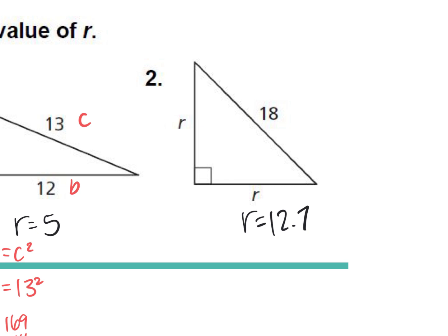Use sine. Do you know either of the angles? They're both 45. Why do both of the angles have to be 45 degrees? It's an isosceles right triangle. So now you could have used sine for this one: sine of 45 would have been r over 18. You could have also used 45-45-90 rules. That would make r little a, and that would make the 18... Who remembers 45-45-90 rules? A times the square root of 2.